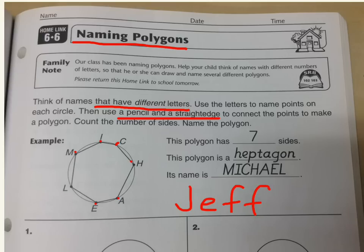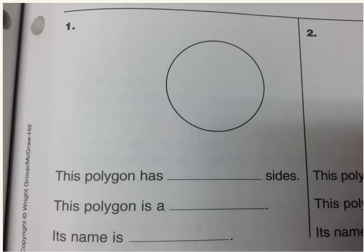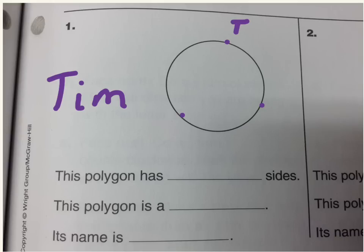So let's see how this works. For number one I'm going to choose the name Tim — a nice short name, also my brother's name. I'm going to make three points on my circle and label those points T-I-M. One thing about this is you usually use capital letters when you're marking points in geometry instead of lowercase letters. So I have T-I-M, now I need to connect my points with the straight edge.